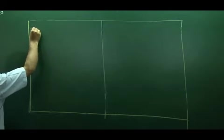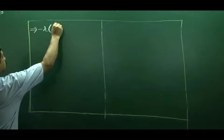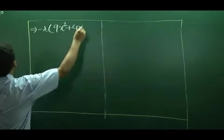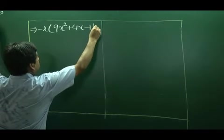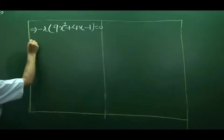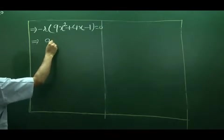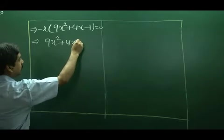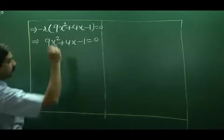Now, take minus R common. This is 9Rx square plus 4Rx minus 1 is equal to 0. So, we get the exact quadratic equation which is 9x square plus 4x minus 1 is equal to 0.